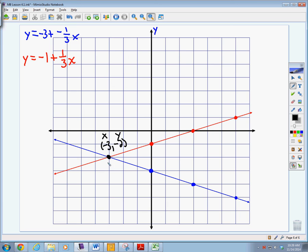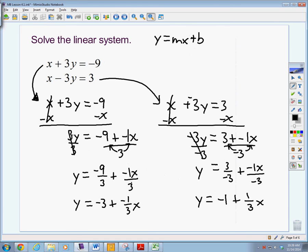So our solution to this system is the point at which the lines intersect. So our solution is just negative 3, negative 2. And we could, if you wanted, plug that back in here.